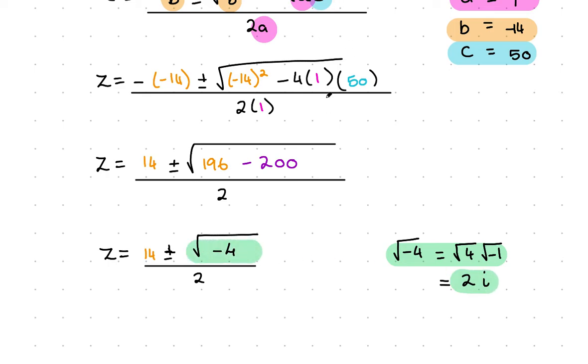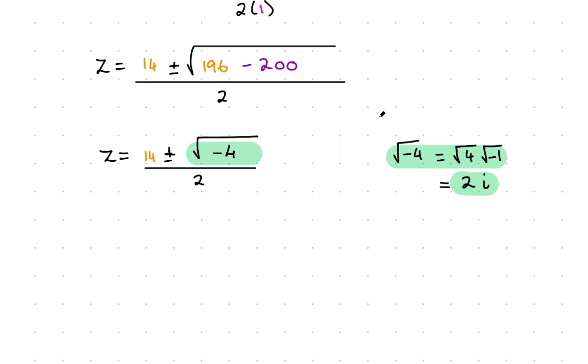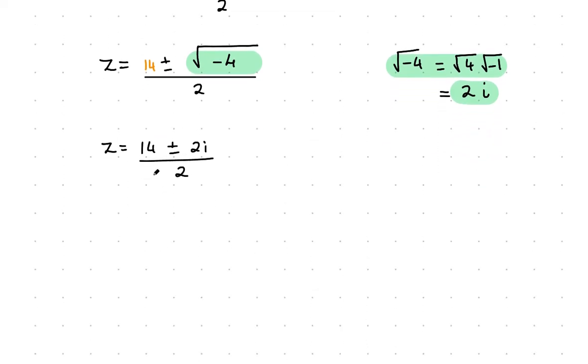This makes it a complex root: we've got z equals 14 plus or minus 2i, all over 2. We take the two scenarios here, the plus version and the minus version.